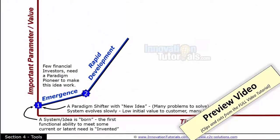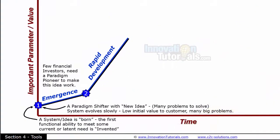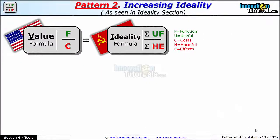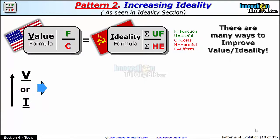The next stage is rapid development — some people call this adolescence. It's often characterized by some interesting new little innovation that caused people to start realizing that maybe this is a good idea. Society starts to recognize the value of this because it becomes a little more interesting, a little more practical, because one of the major problems of the original idea got solved. So continually make the numerator bigger and continually make the denominator smaller. There are a whole lot of different ways to improve value, improve ideality, and we're going to show you six.